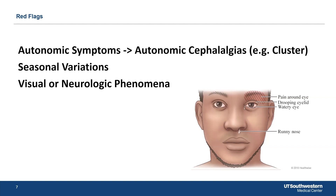The most common autonomic cephalalgia is cluster headache, which can be very similar to trigeminal neuralgia. You really want to differentiate them because the treatment is going to be very different for cluster headache versus trigeminal neuralgia.